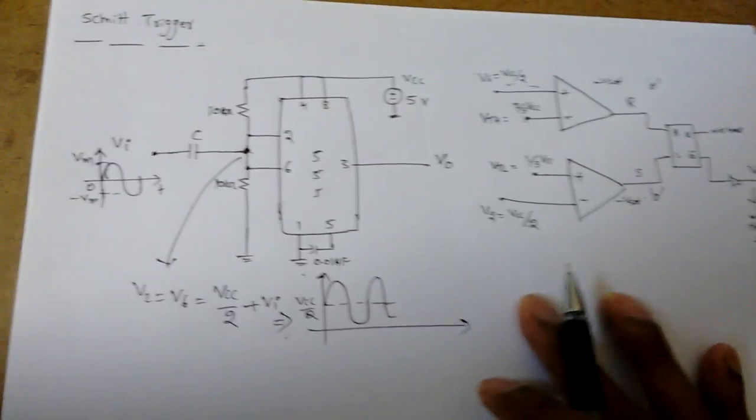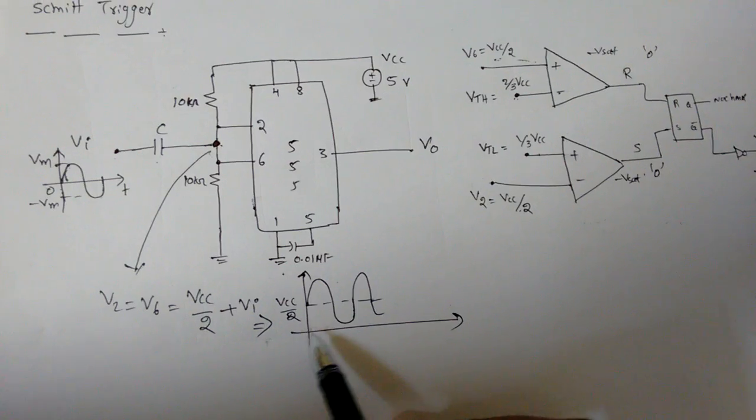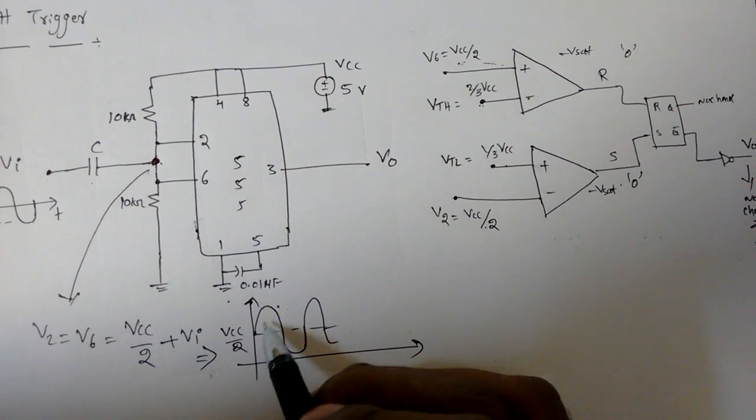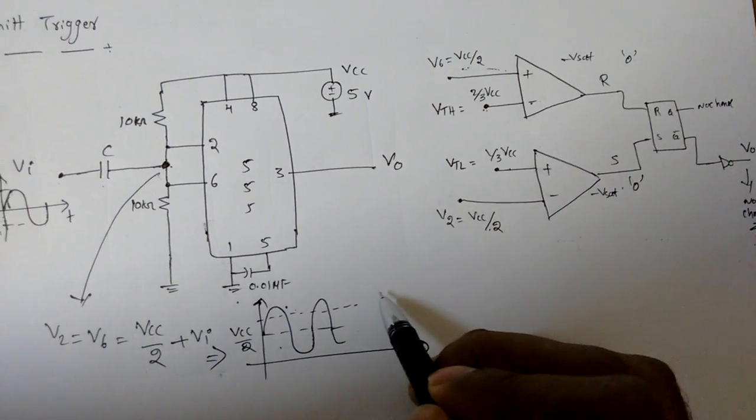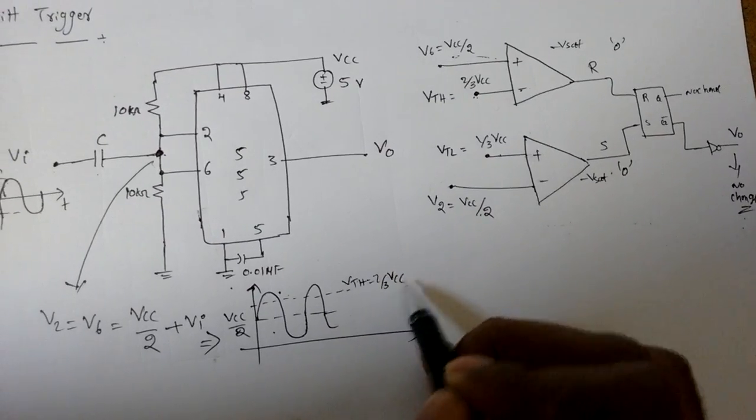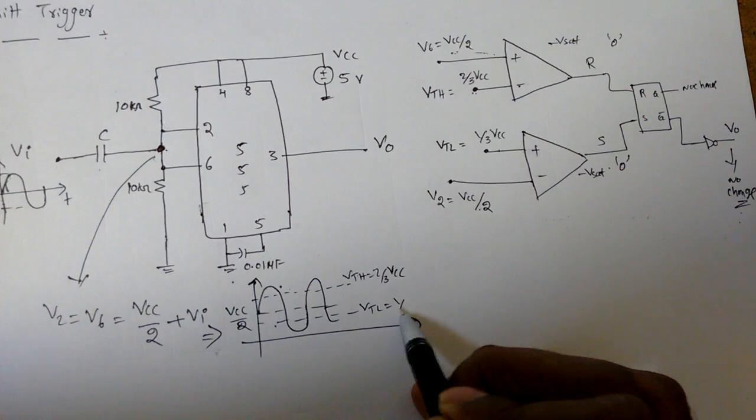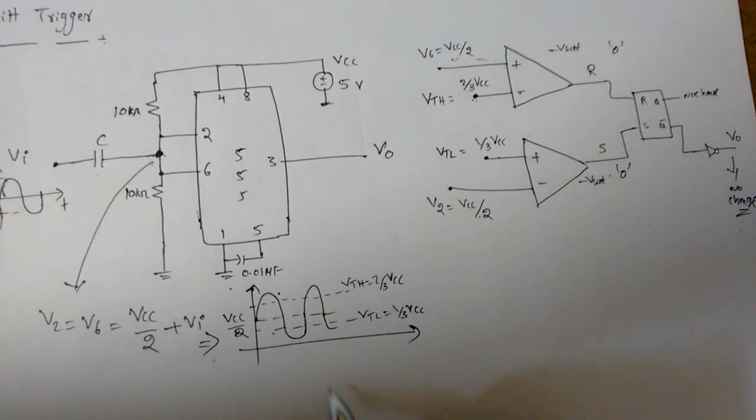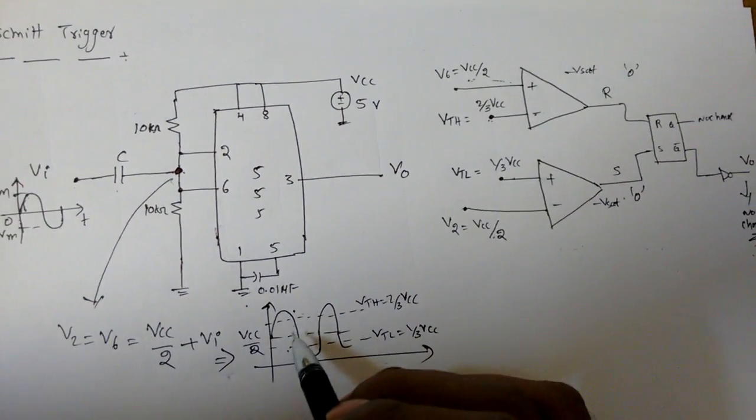Now the moment when we apply this input signal like 0 to Vm minus Vm, it will be like this. Whenever the moment - there is some levels, that is VTH that is 2 by 3 VCC, and one more level is there, that is VTL 1 by 3 VCC. By applying VCC by 2 plus VI here.